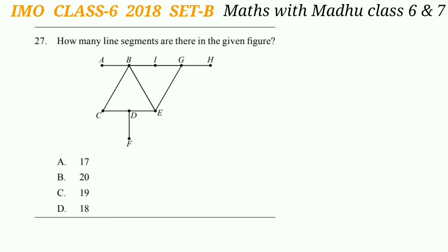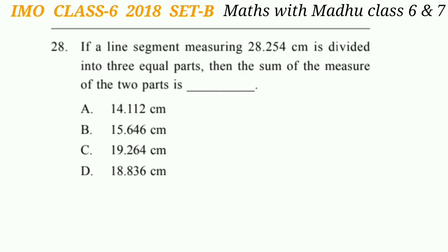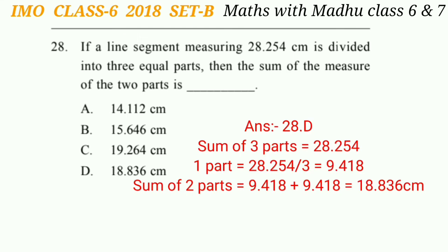Question 28: If a line segment measuring 28.254 cm is divided into 3 equal parts, find the sum of the measures of 2 parts. Since 3 parts = 28.254 cm, one part = 28.254 ÷ 3 = 9.418 cm. The sum of 2 parts = 9.418 + 9.418 = 18.836 cm. The answer is option D.